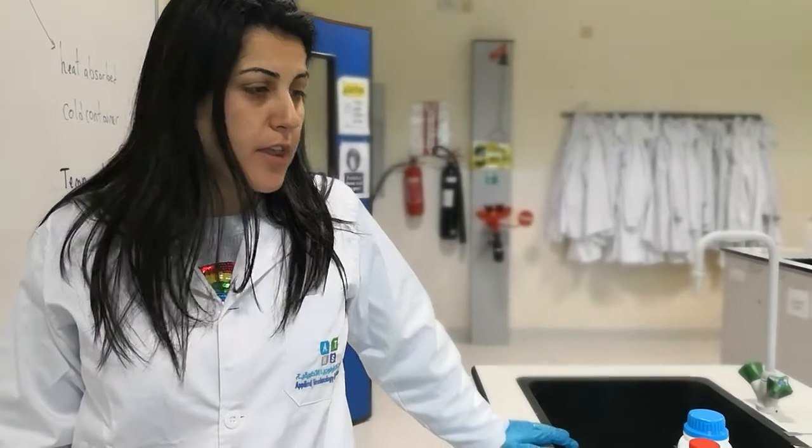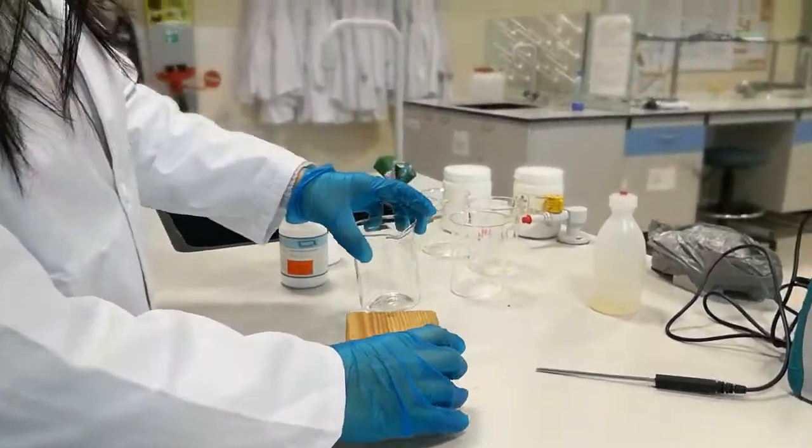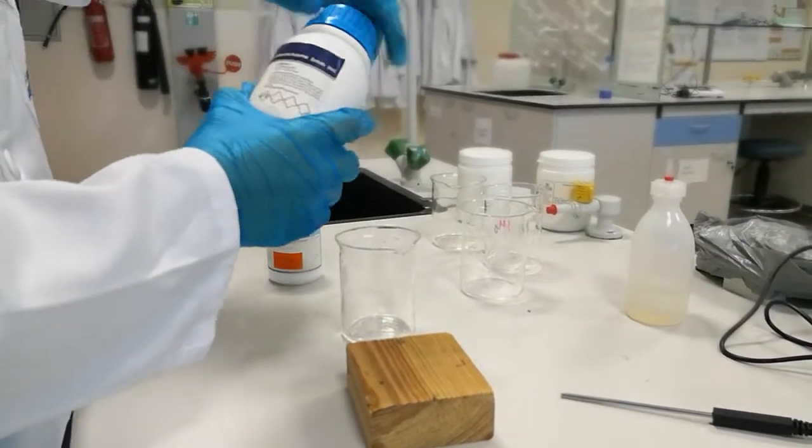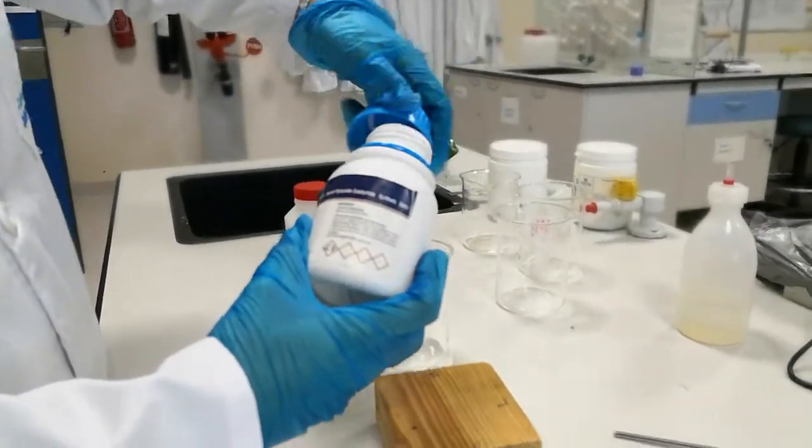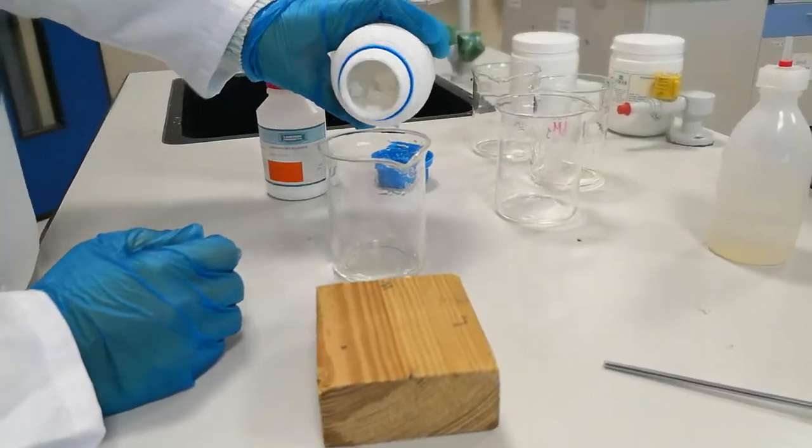I am going to do two experiments today to demonstrate exothermic and endothermic chemical reactions. First, we are going to do an endothermic reaction where I add barium hydroxide and ammonium chloride together.